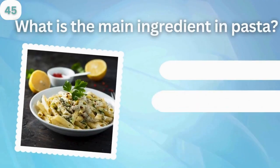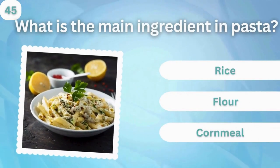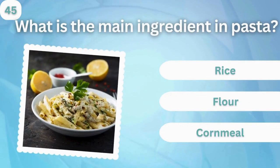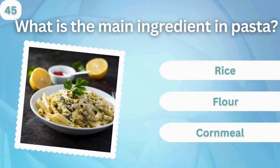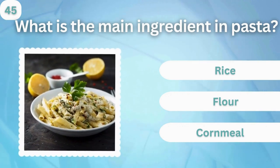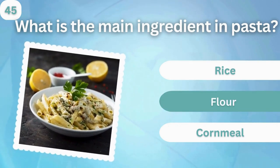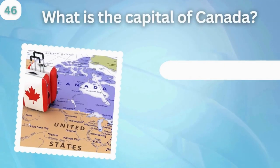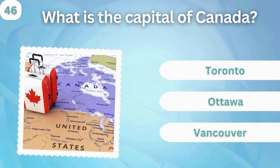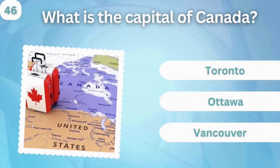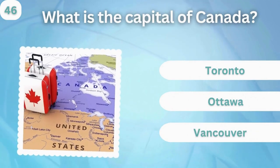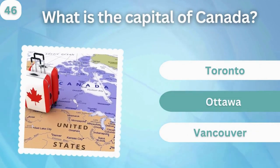What is the main ingredient in pasta? Rice, flour, or cornmeal? Flour. What is the capital of Canada? Toronto, Ottawa, or Vancouver? Ottawa.